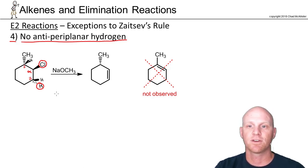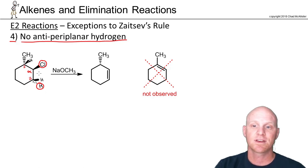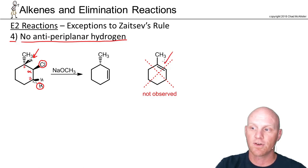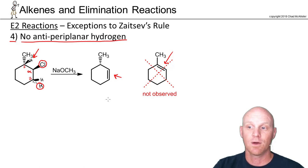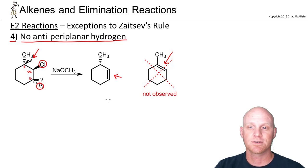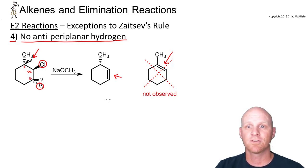There's stereospecificity associated with E2 reactions. In this case we cannot use that hydrogen at all and cannot form the alkene in that location — we can only use the other beta hydrogen with this anti-periplanar arrangement, which is absolutely mandatory. So the four exceptions are: bulky base with bulky substrate, conjugated pi bond formation, poor leaving group (fluoride), and the anti-periplanar hydrogen requirement. The two most common are the bulky base with bulky substrate and the anti-periplanar hydrogen.